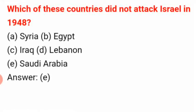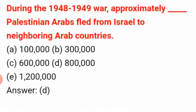Which of these countries did not attack Israel in 1948? The answer is E: Saudi Arabia. During the 1948 to 1949 war, approximately how many Palestinian Arabs fled from Israel to neighboring Arab countries? The answer is D: 8 lakh.